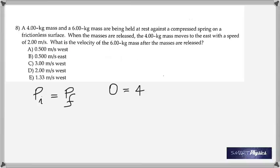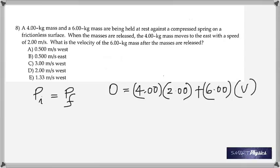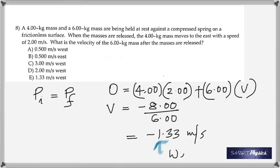Here you have two masses held at rest against a compressed spring, and the masses are released. Velocity of one of them is given, find the velocity of the other. The initial total momentum is zero because they were both at rest, and so that should be equal to the total final momentum. You get minus 1.33 meters per second, which means it's going to the west.